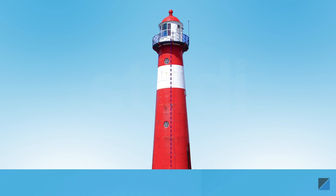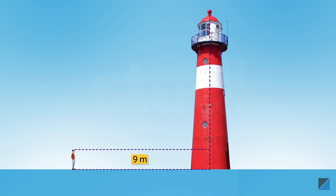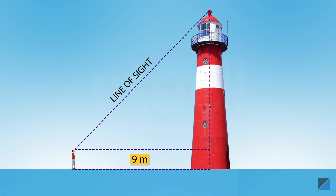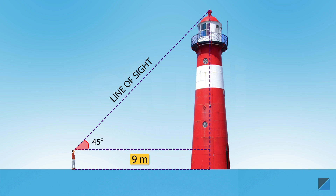Let's say you want to measure the height of a tower. You are standing at a distance of 9 meters from the base of the tower and looking at the top. The line connecting your eyes and the top of the tower is called your line of sight. The angle between your line of sight and the horizontal is called the angle of elevation. You use a theodolite and measure the angle of elevation as 45 degrees.